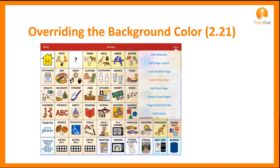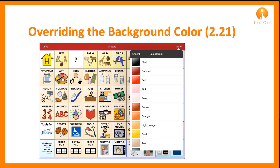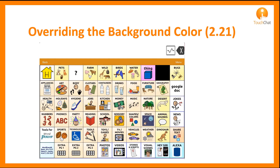A new menu item includes adding the ability to override the background color of the page, called Page Style Override. You will see this option, then turn it on, and open the color options. I selected black, and now you will see the background behind the button is black. I removed one button from this page to demonstrate.